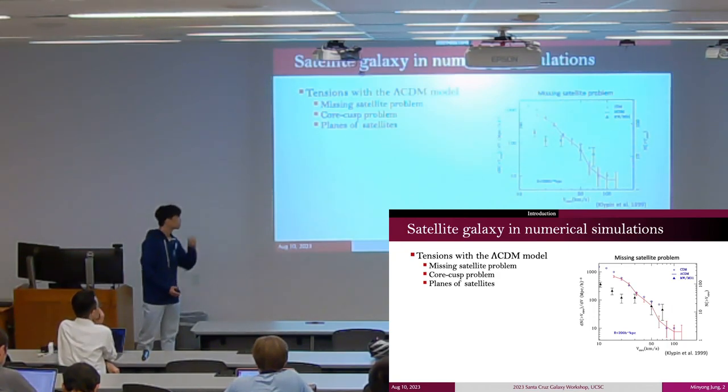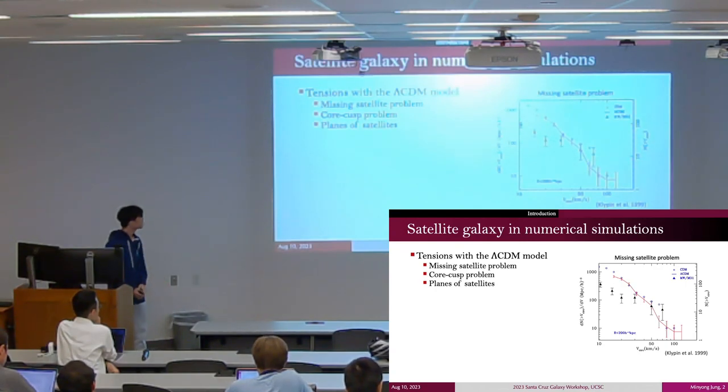Nowadays, many people think that due to baryonic physics, most of these dark matter halos in the N-body simulations couldn't form stars and make them unobservable in the real universe.